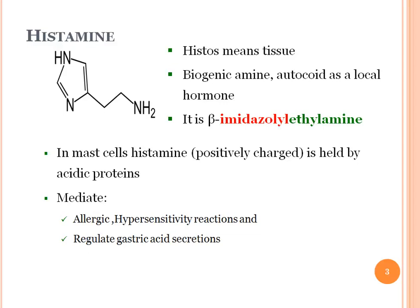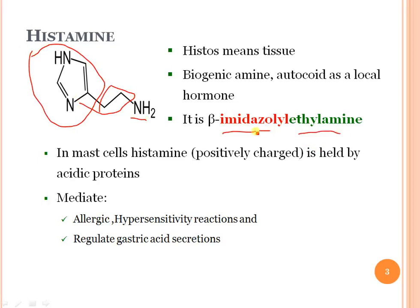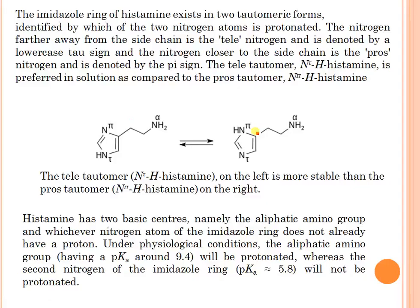Chemically, histamine is beta-imidazole ethylamine. It contains imidazole as a basic nucleus with an ethylamine side chain. Histamine — where 'histo' means tissues — is a biogenic amine or autacoid, acting as a local hormone in mast cells. As a positively charged molecule, it is held by acidic proteins and mediates allergic hypersensitivity reactions and regulates gastric acid secretion.